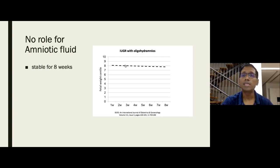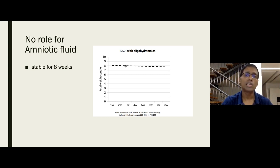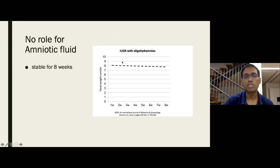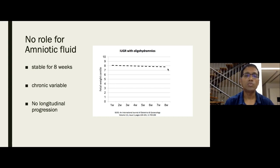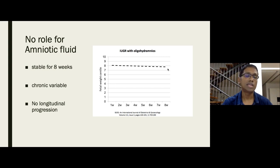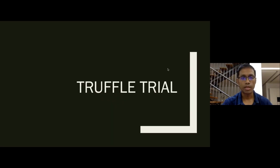Amniotic fluid: it tells us little about the condition of the fetus. Yes, poor perfusion leads to decreased urinary output and oligohydramnios, but this does not tell you whether the baby is hypoxic or acidotic. Studies show that once amniotic fluid entered the oligohydramnios range, it remained unchanged for eight weeks — meaning it cannot be used to decide on delivery. You need Doppler or brain stem assessment to make that decision.